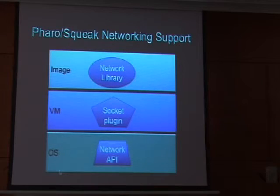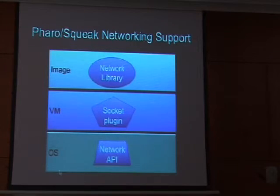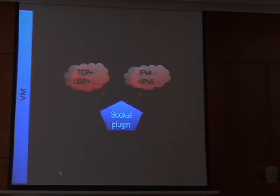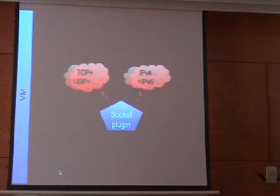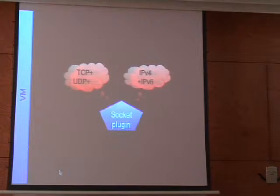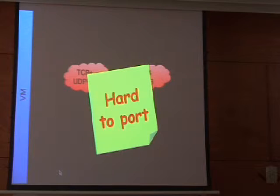In our case, the socket plugin — which is the networking plugin — interfaces with the network API of the operating system. We started looking at how it works, and we noticed that at the VM side, the socket plugin mixes everything together. Everything related to networking is written in C, which is a nice language but not as modular as we would like. So we have everything gathered in one big plugin, written in a low-level language.